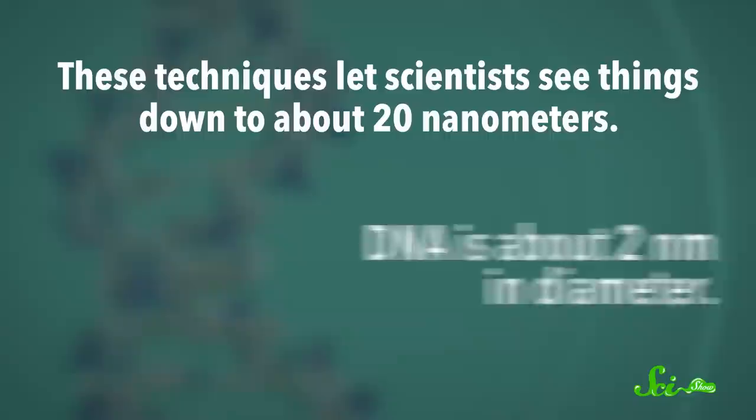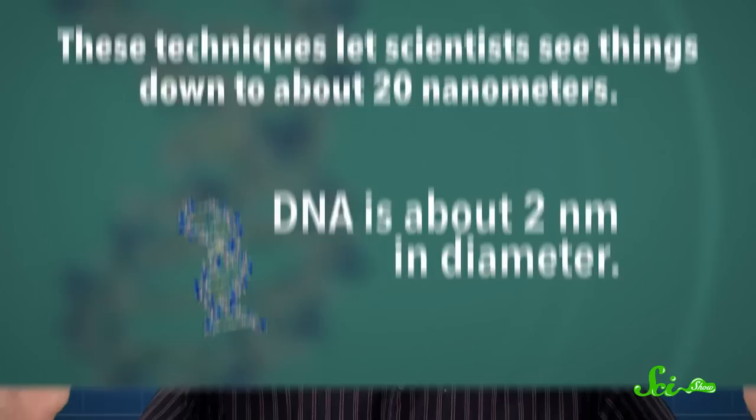These techniques can let scientists see things down to about 20 nanometers, which is only about 10 times the width of DNA, and 10 times smaller than what you would see with a traditional microscope. So for the first time, we can now see tiny details of a cell with visible light.